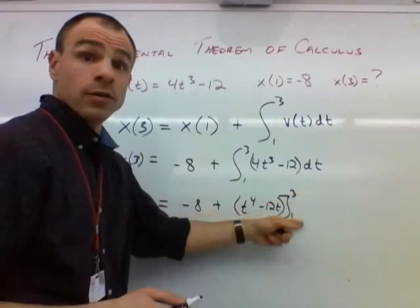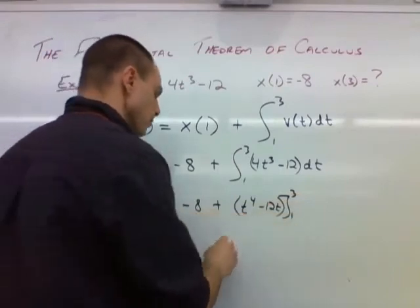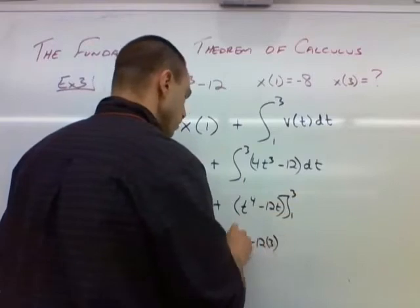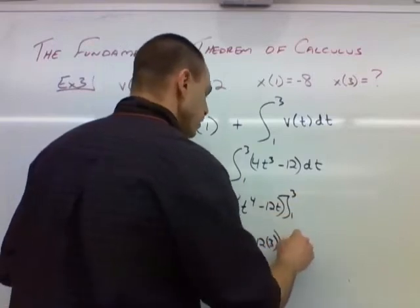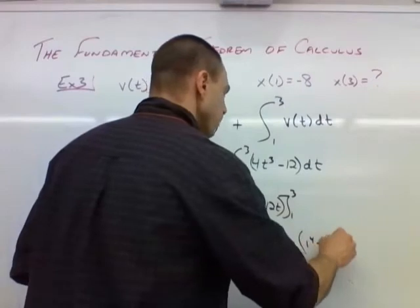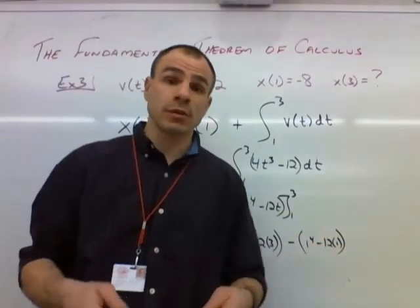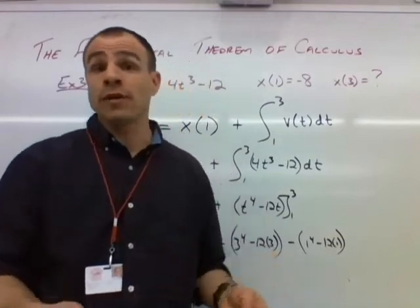Okay, so we're going to plug the 3 in first and the 1 in second. When we plug in the 3, we have 3 to the 4th minus 12 times 3. And when we plug in the 1, we have 1 to the 4th minus 12 times 1. 3 to the 4th, that's 3 times 3 times 3 times 3, or 9 squared, that's 81.